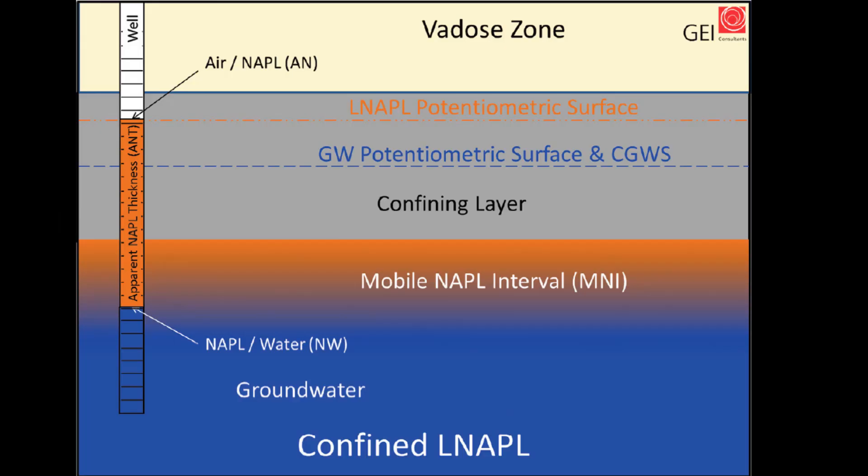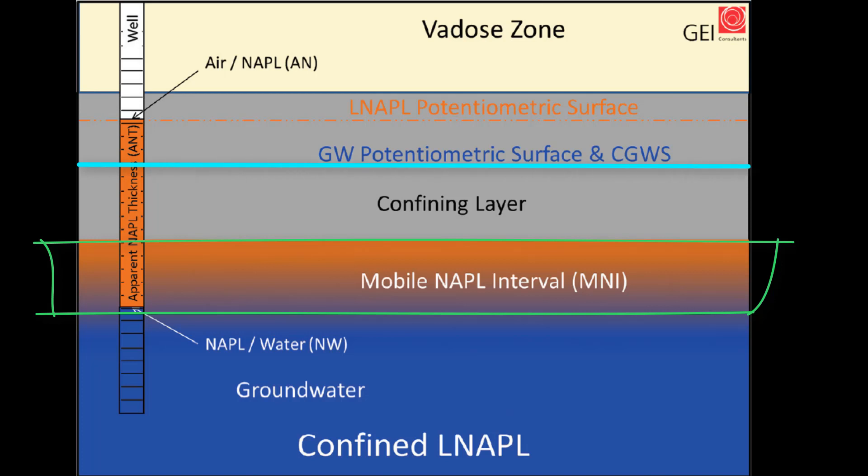Confined LNAPL occurs at sites where the mobile LNAPL in the formation occurs in a relatively coarser zone. The upward vertical movement of that LNAPL is inhibited by a relatively finer grained layer, and the water table occurs above the lower contact of that fine grained layer.